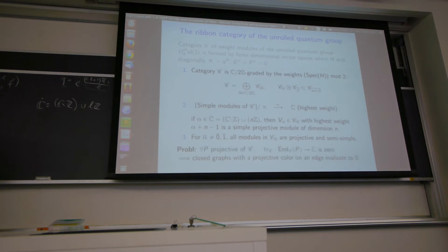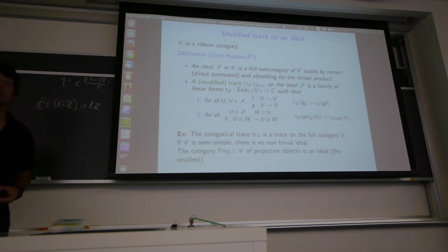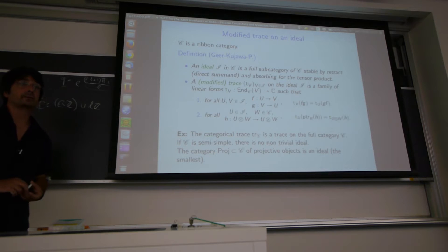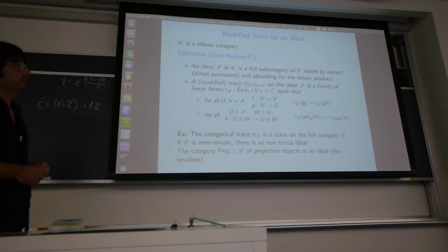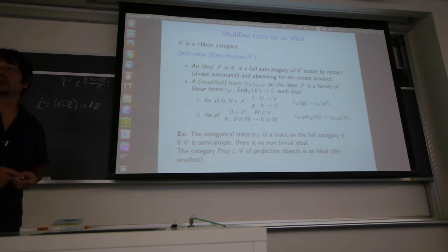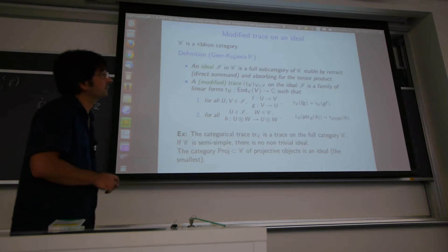To solve this problem, we use the technology of a modified trace on an ideal in a ribbon category. Here, C is a ribbon category. First, we define what is an ideal: it's a full subcategory which is stable by retract (i.e., direct summands of objects in the ideal are also in the ideal) and absorbing for the tensor product.